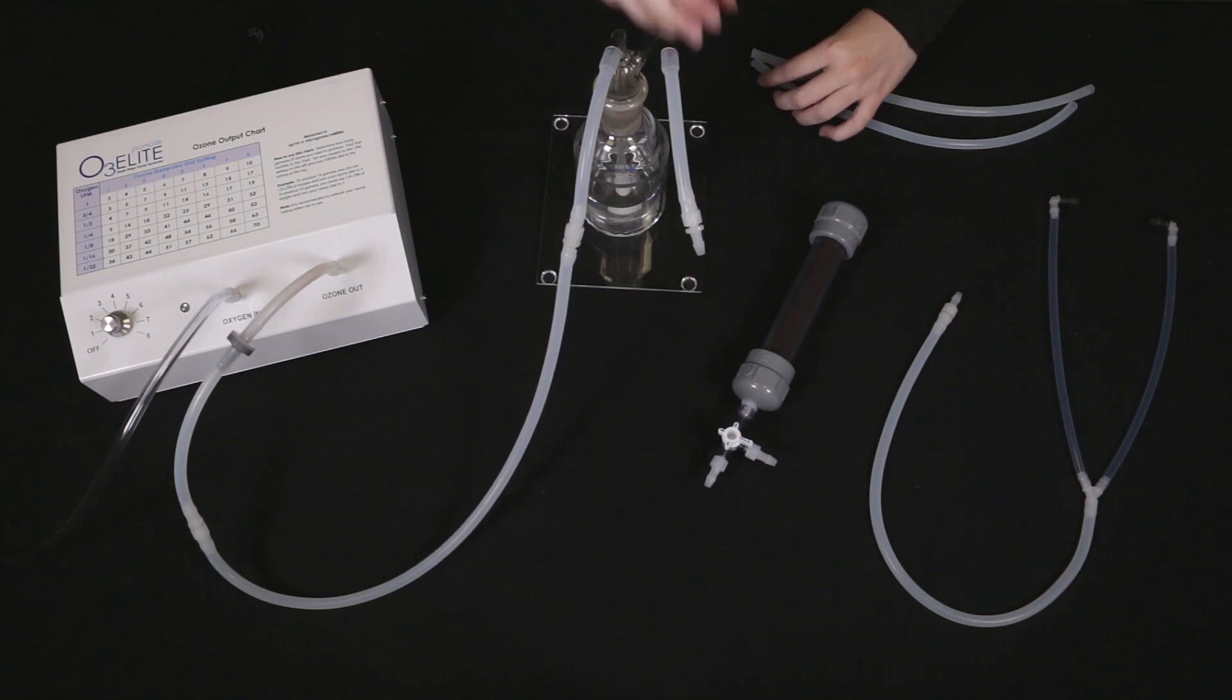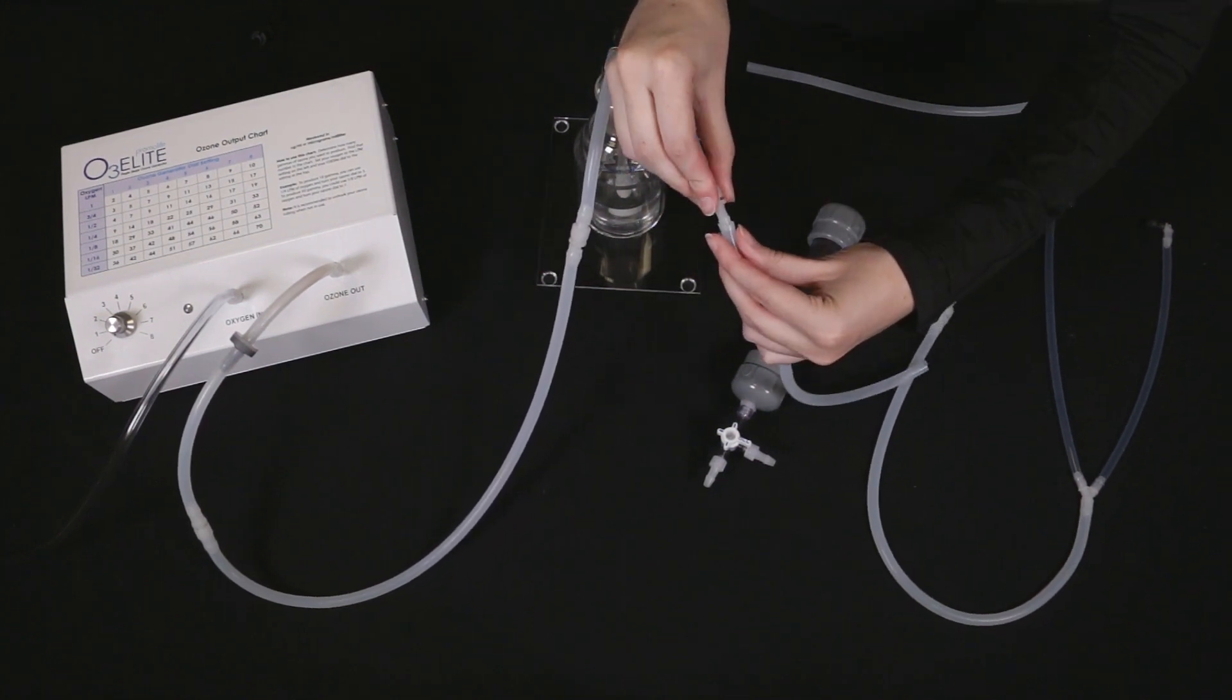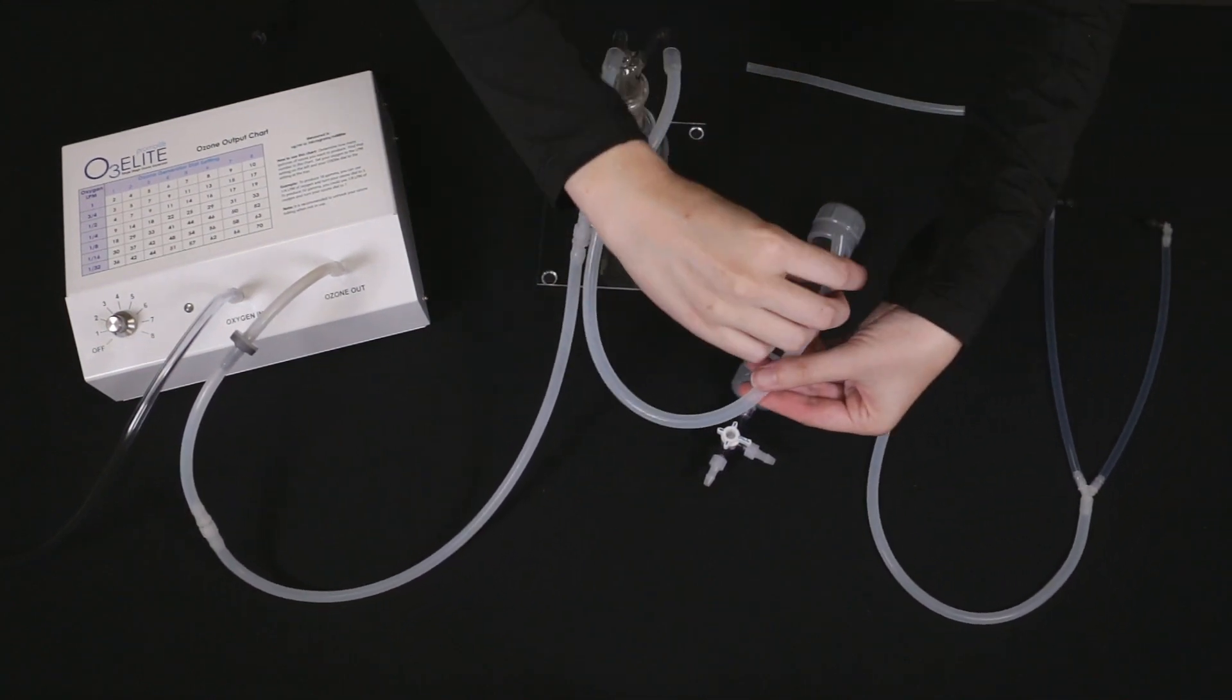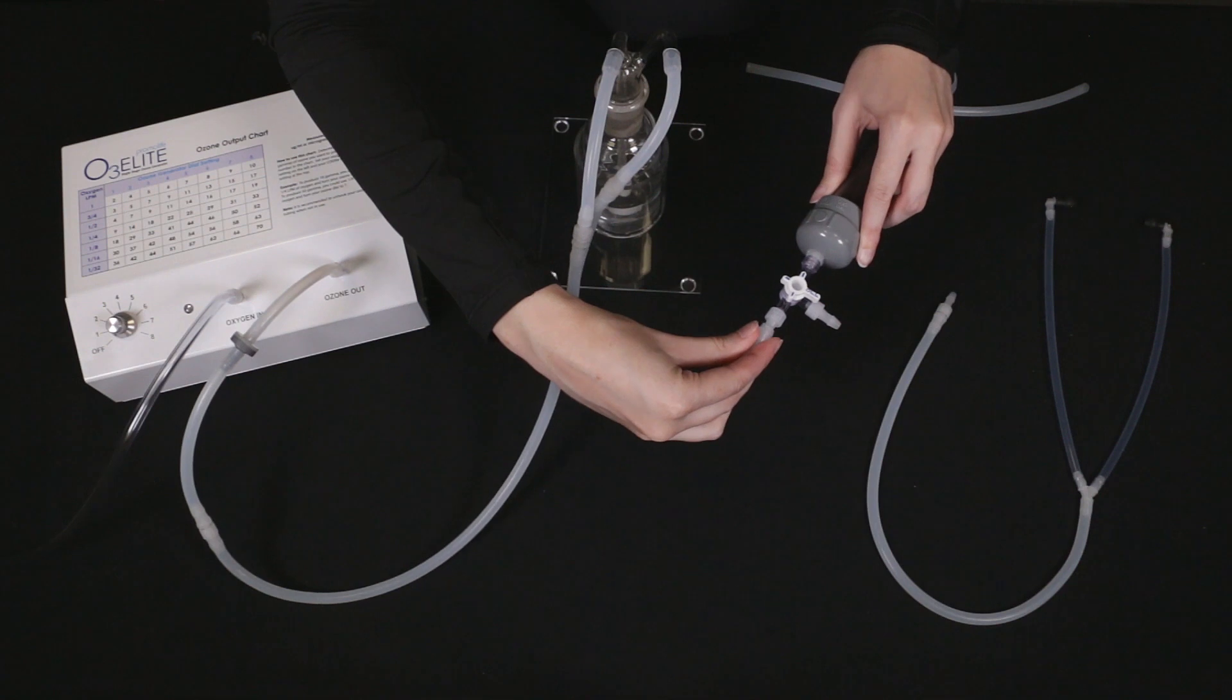To connect the Destruct, take one of the 3-foot pieces of silicone tubing and connect one end to the other straw of the humidifier, the Ozone Outstraw, and the other end to the destruct.